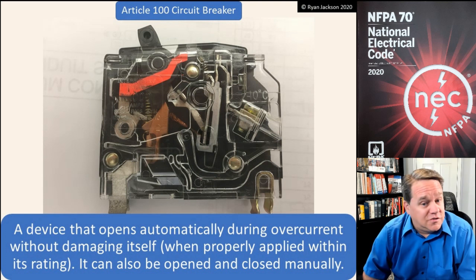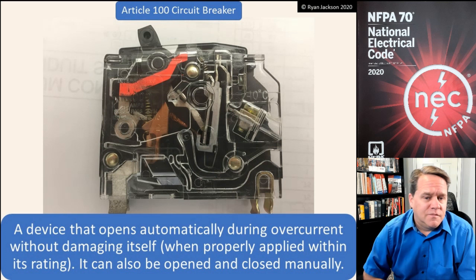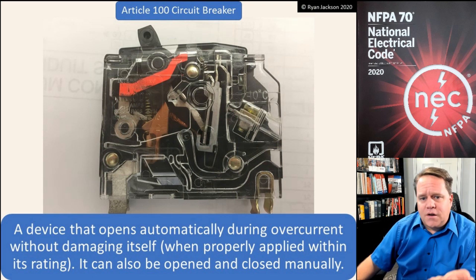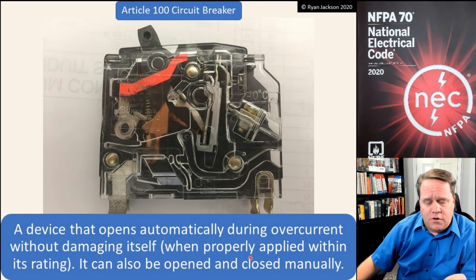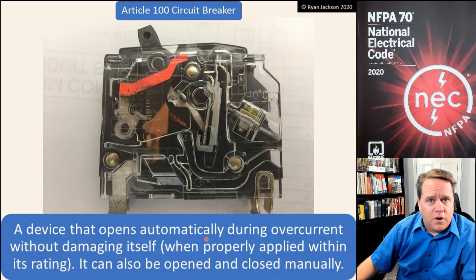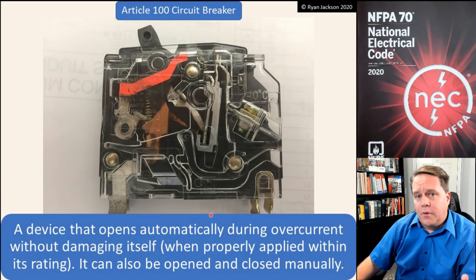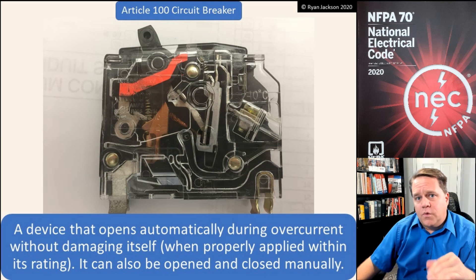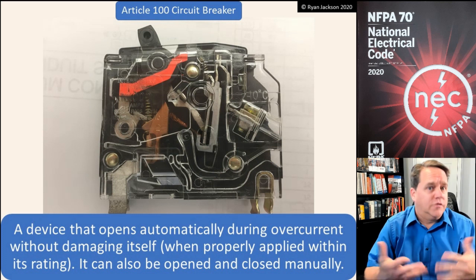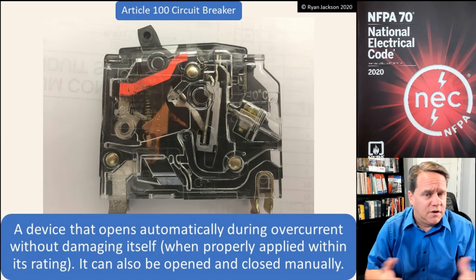A circuit breaker can also be opened and closed manually, unlike a fuse. A typical thermal magnetic circuit breaker has two components: the thermal part, which is for overloads, and the magnetic part, which is for ground faults and short circuits — or we could just call them faults or shorts.